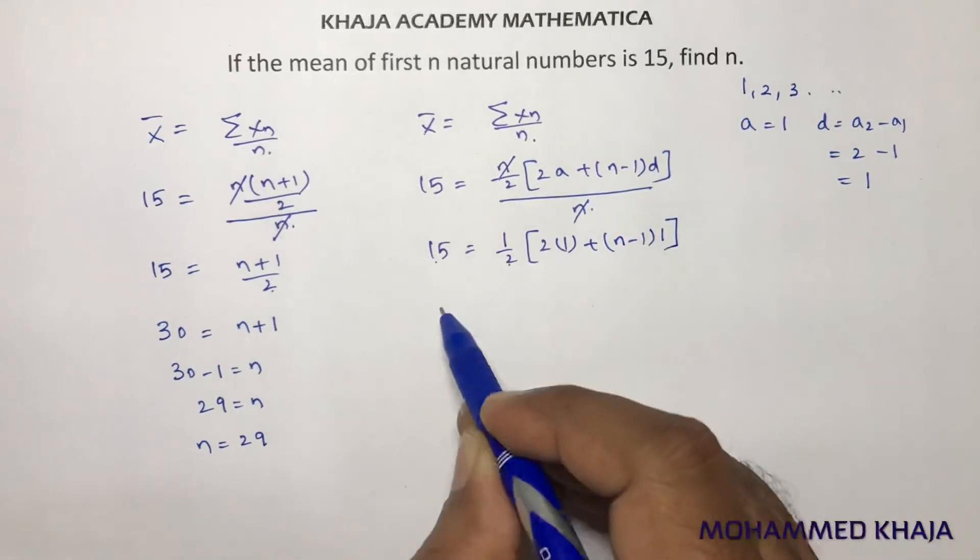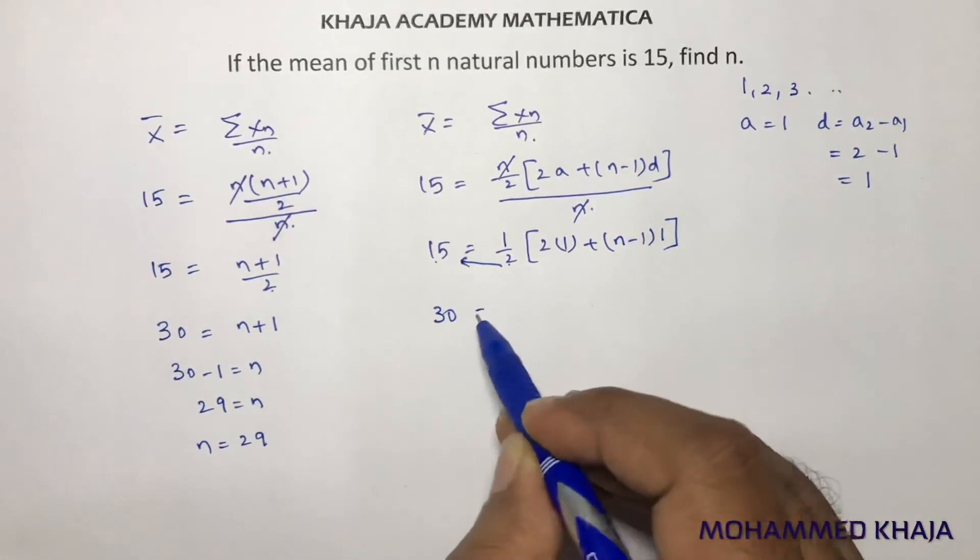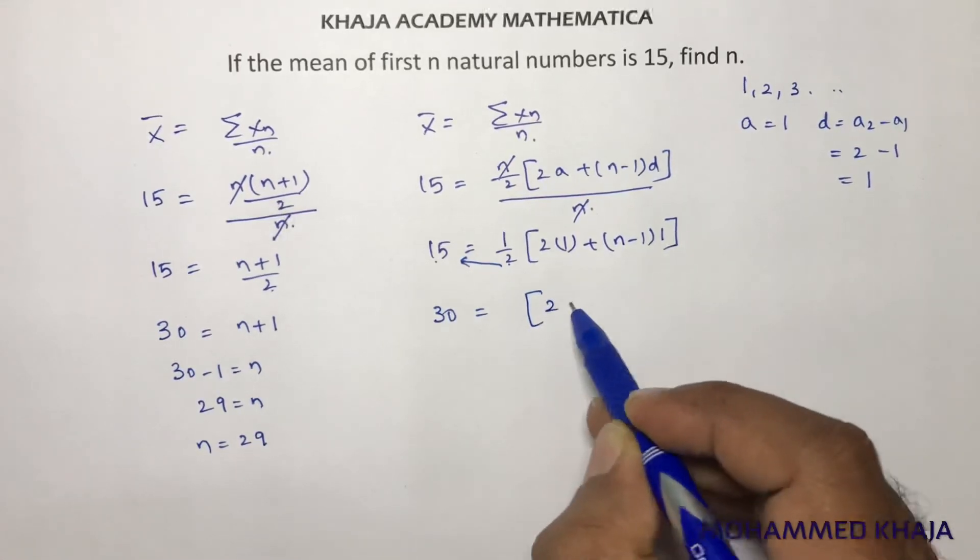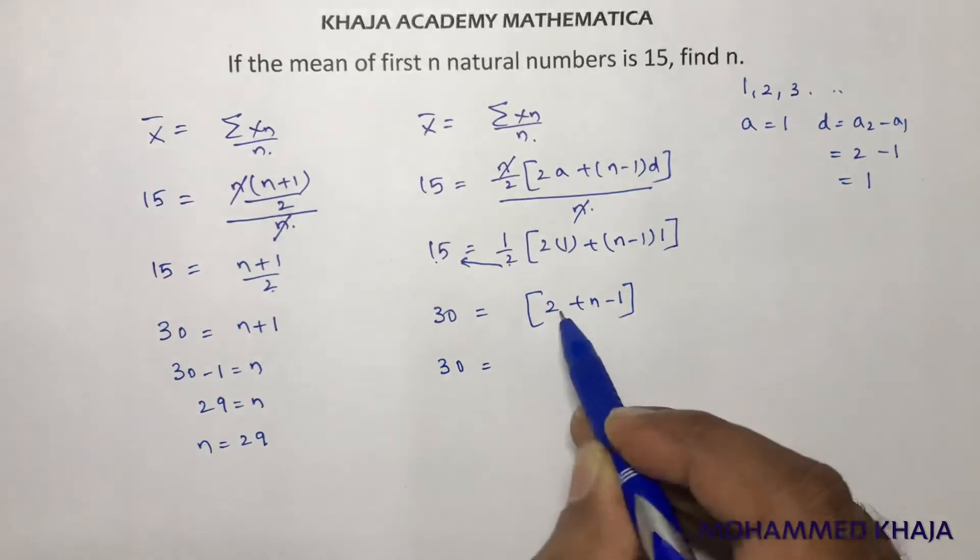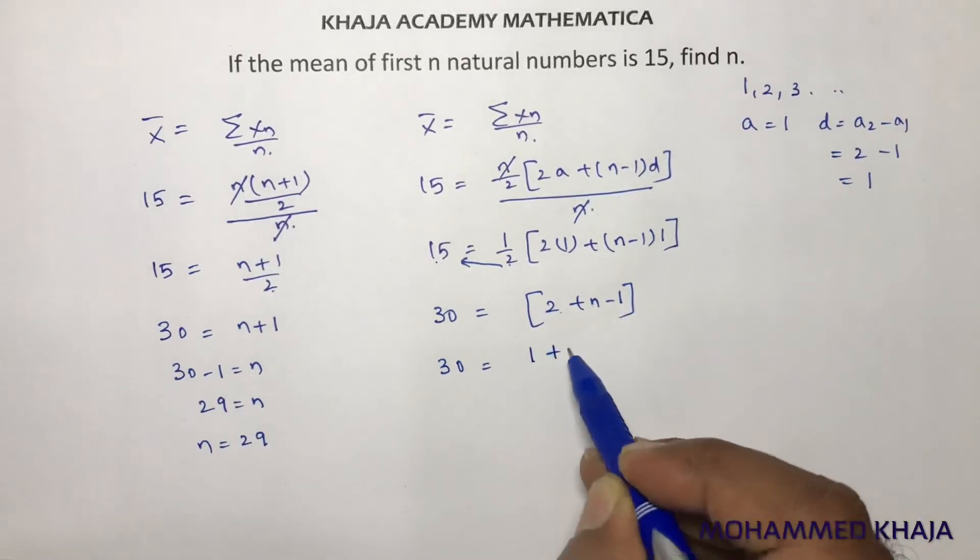Now, 2 times 15 is 30. If I transpose this 2, then 2 into 1 is 2, plus n minus 1. So 30 equals 2 minus 1, which is 1 plus n.